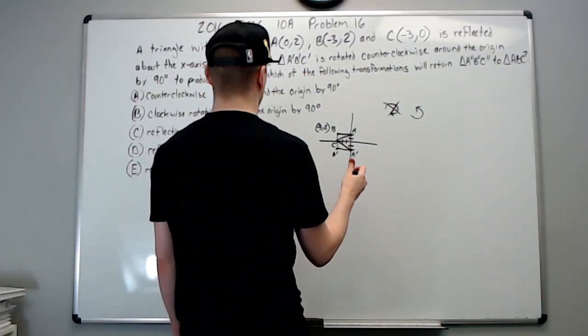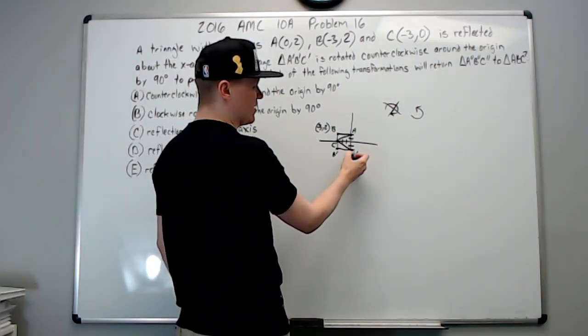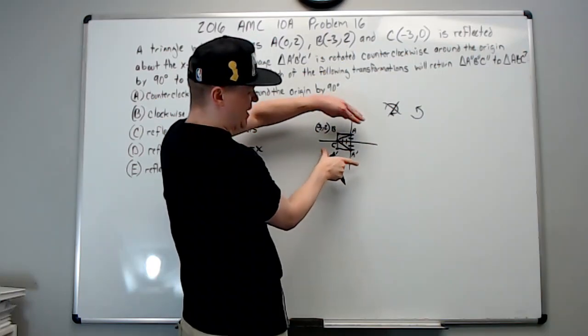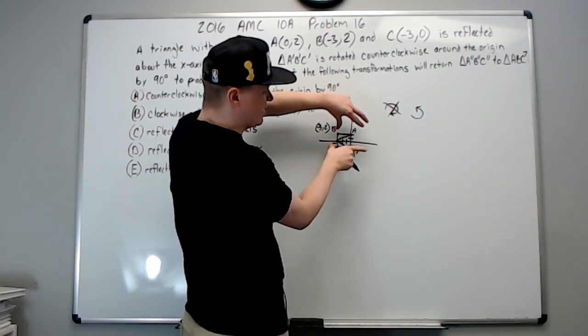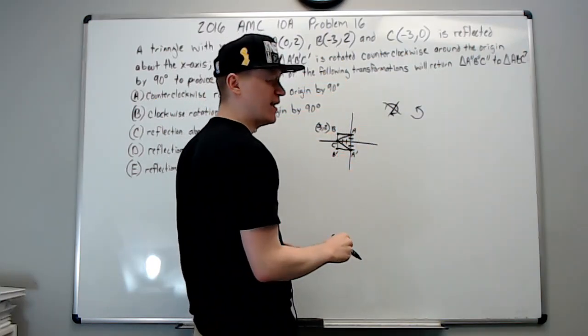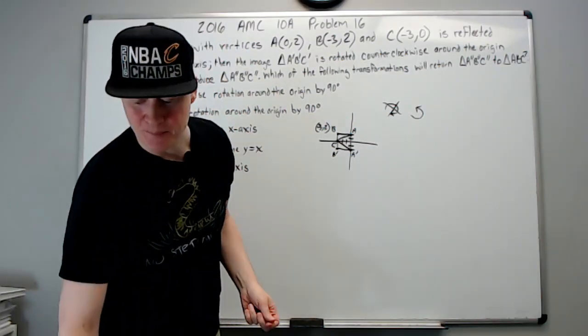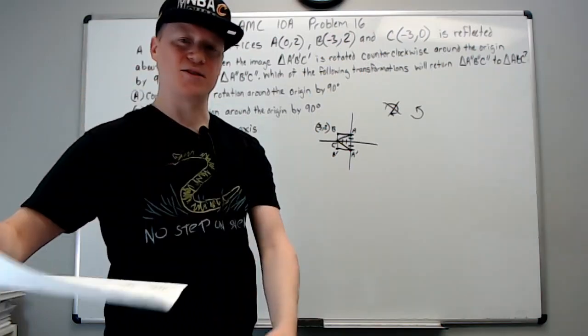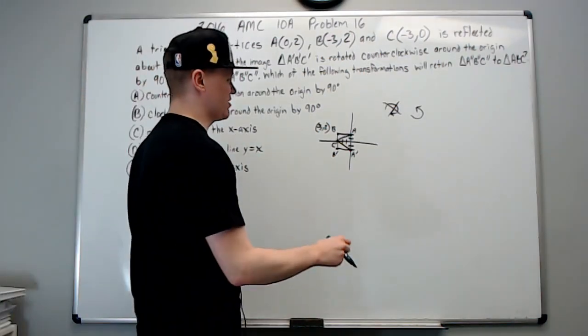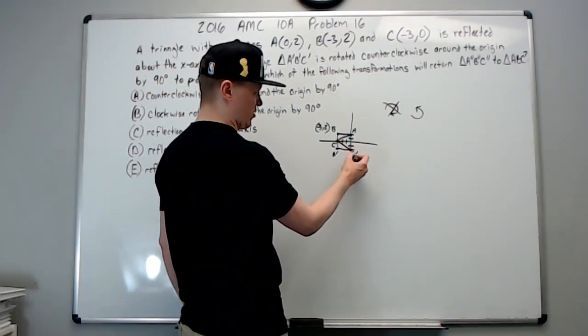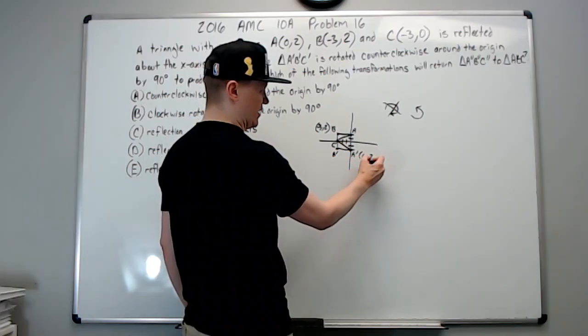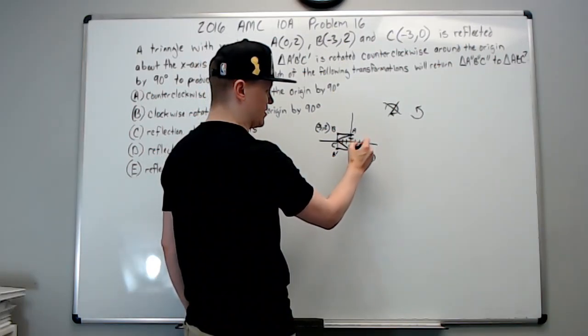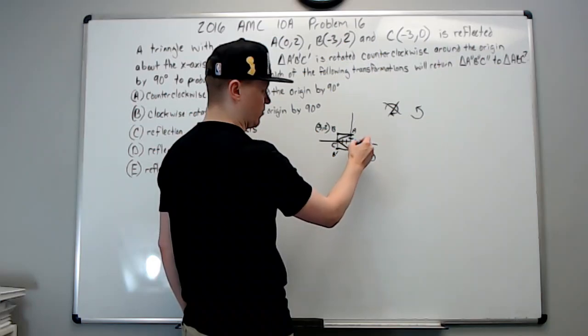To go 90 degrees counterclockwise around the origin, where is A going to end up? You can just mentally grab the whole graph including the axes and rotate it this way. In fact, if you're using a piece of paper, you can just rotate the piece of paper that you're holding to represent that. This is currently at (0,-2). It's now going to be, when you go 90 degrees counterclockwise, at (2,0). So that's where A double prime is.